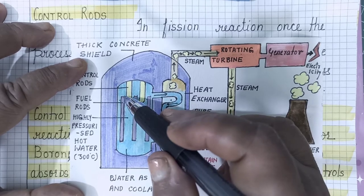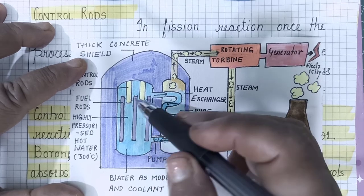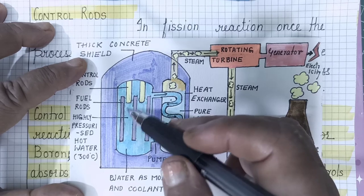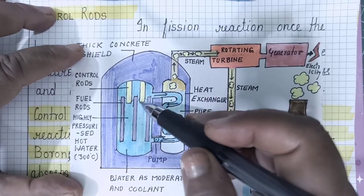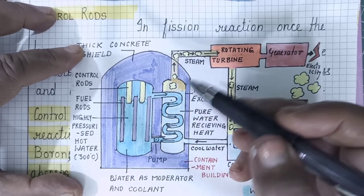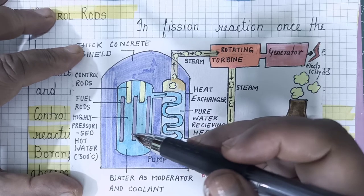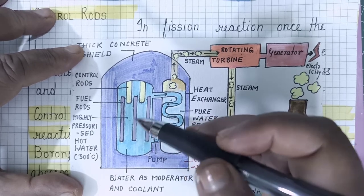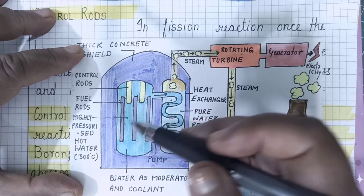Control rods are mostly made of cadmium. Other materials also used as control rods include silver, indium, and boron. So if an exam question lists options and cadmium is not there, you can look for indium, boron, or silver as correct answers.